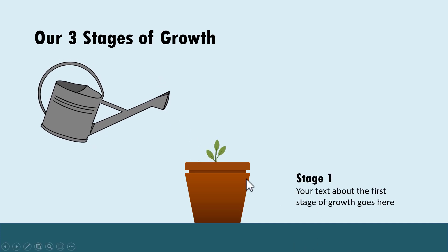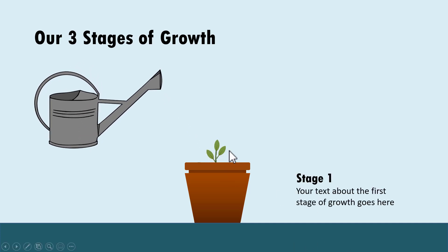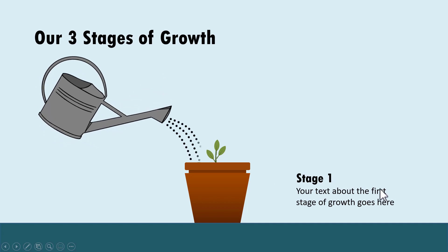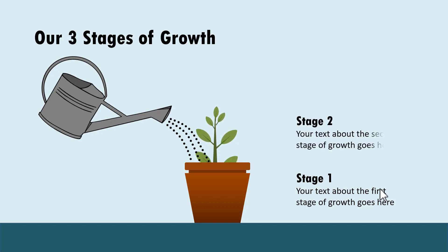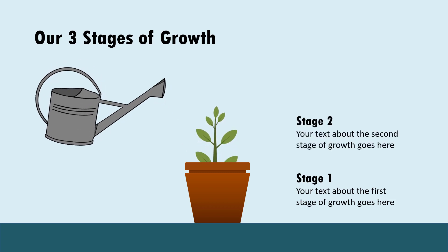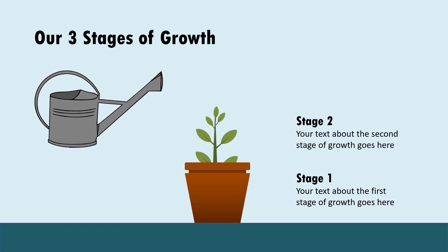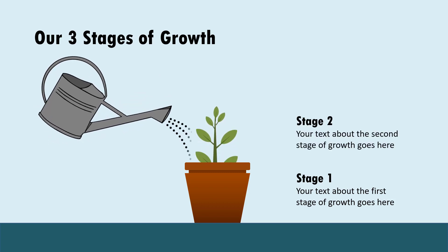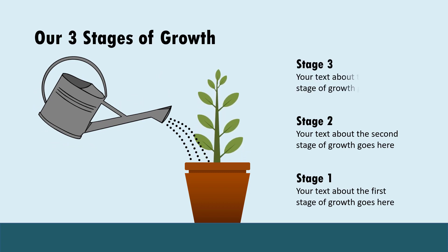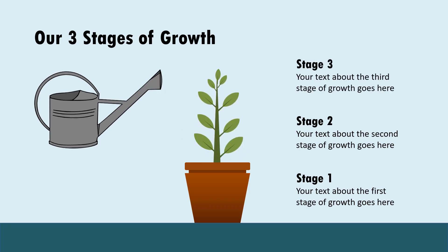You can see that this is the nascent stage. Then after providing my explanation about the first stage, I click again and we show the growth to the second stage. We provide our explanation and then on a click we have the nurturing happening for the final stage, which is stage three.